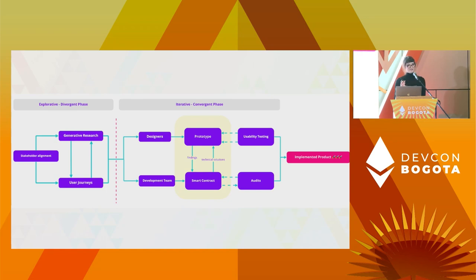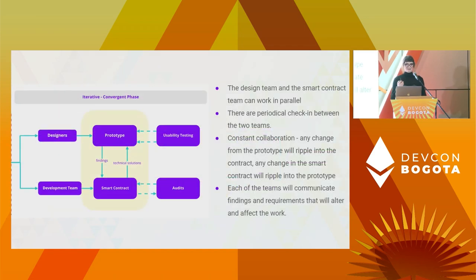Research has been conducted, assumptions have been probed, findings have been incorporated into the new user journey, and all stakeholders have validated them — now the iterative phase can start. The new user journey, validated with users and stakeholders, becomes the backbone of the project. Based on these documents and artifacts, the development team and the design team can start working in parallel. The design prototype and smart contract writing is a very important step in which the two teams will need constant check-ins and will need to accommodate each other's findings.